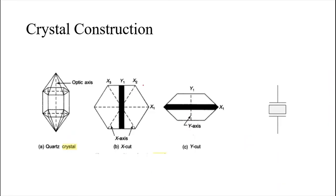Taking the example of quartz crystal — most electronic circuits are built using it. When you apply an AC electrical signal you obtain mechanical vibrations that produce a resonant frequency. This resonant frequency depends on how you cut the crystal. Two types of cuts are normally used: the X-cut and the Y-cut. You can further polish the crystal to obtain a different frequency of oscillation.